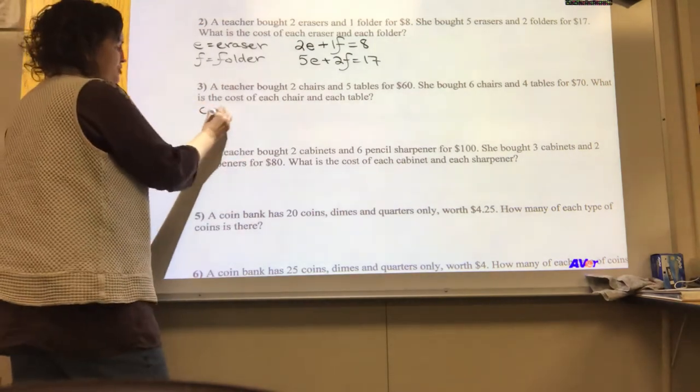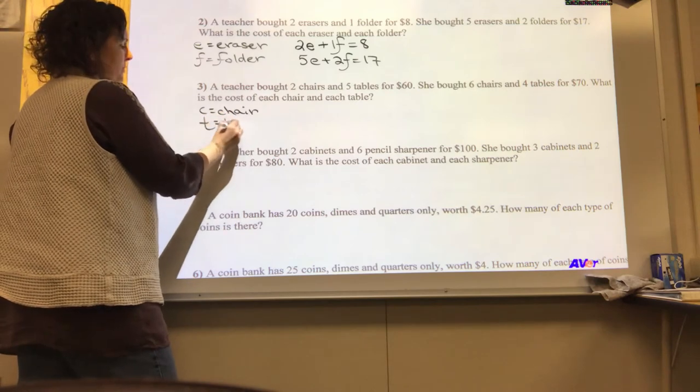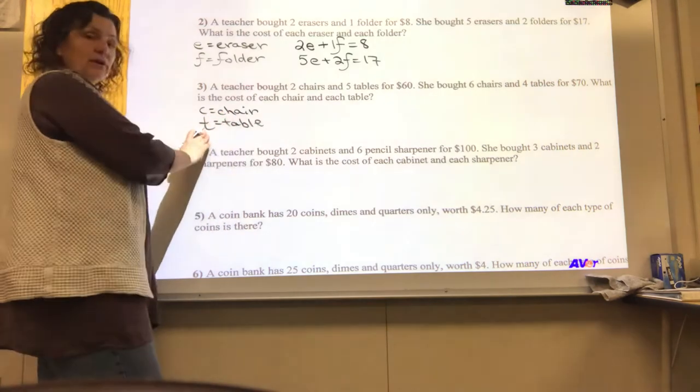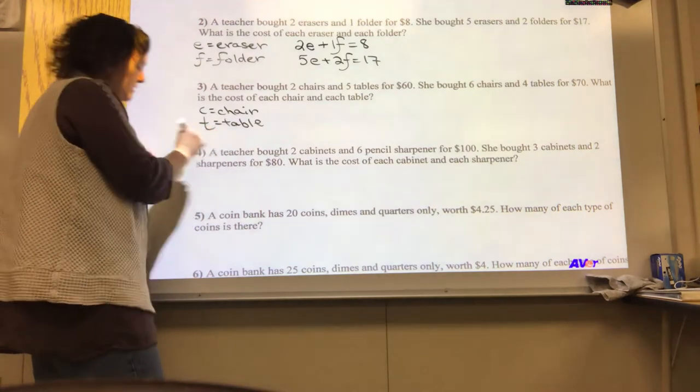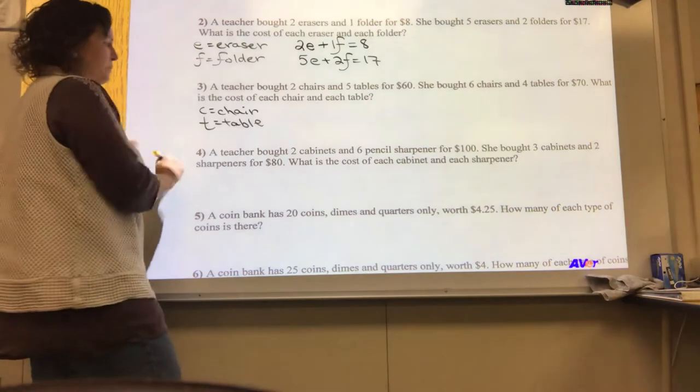Now we're going to do the next two. So I'm going to go with C for chair and T for table. I would recommend that when you're using T as a variable, you put that little tail on there because after a while, the T just looks like a plus sign. Warning, warning. We don't want to do that.